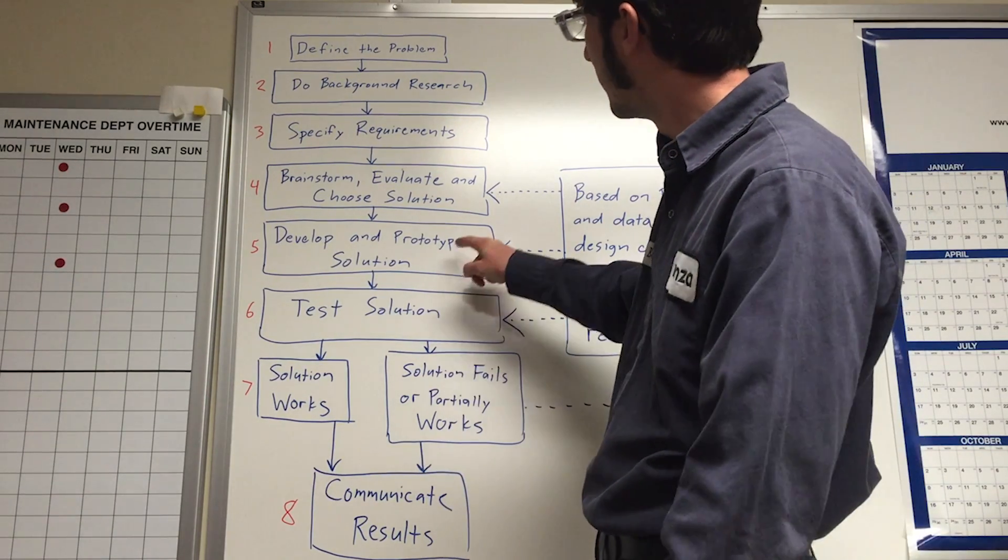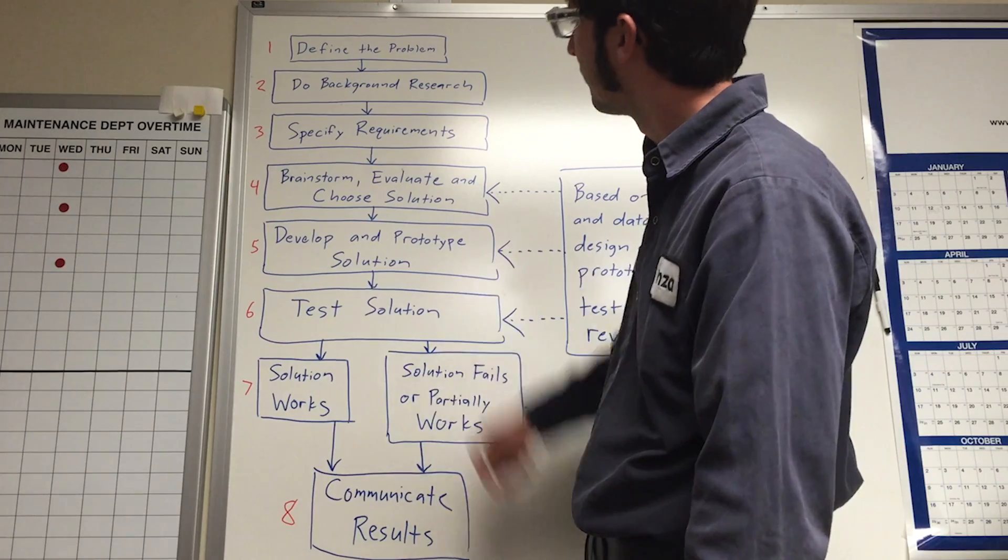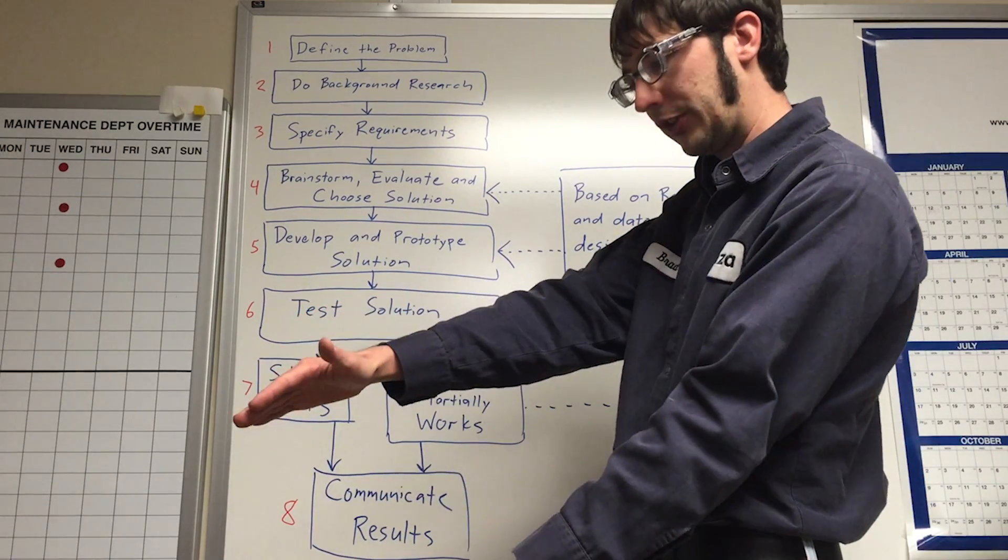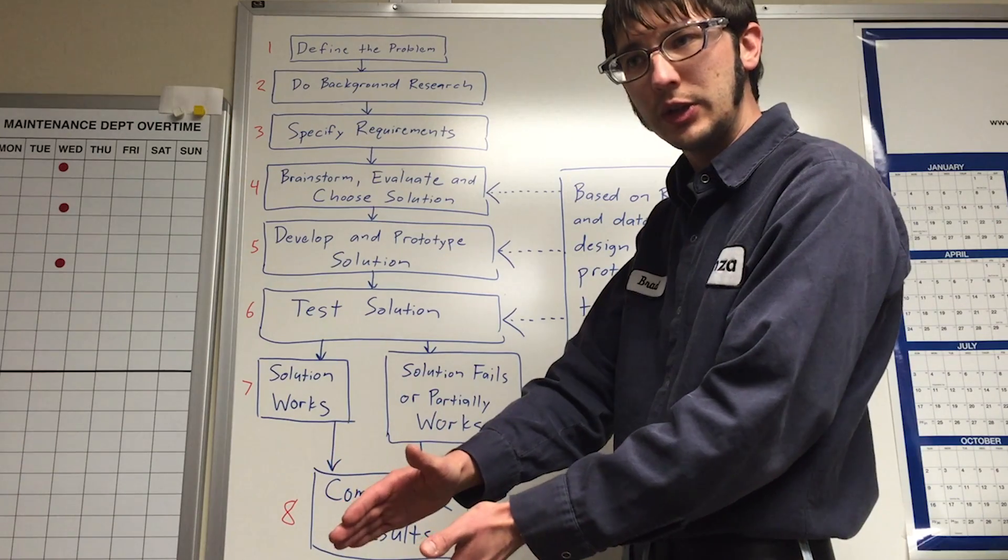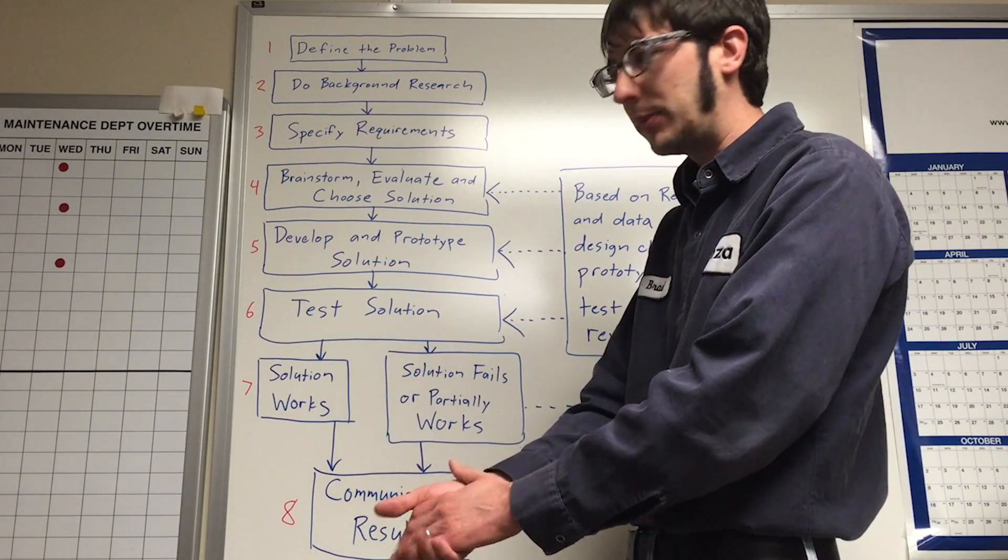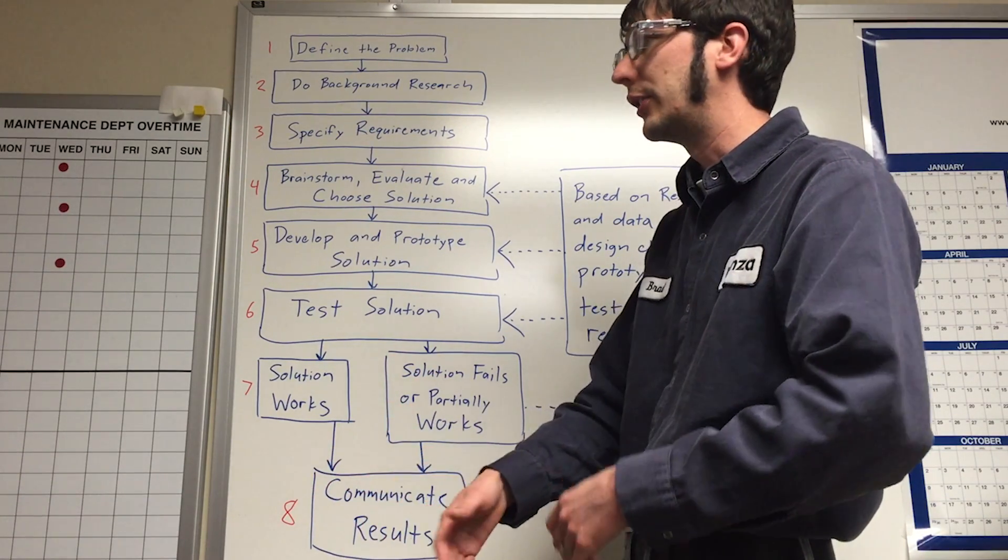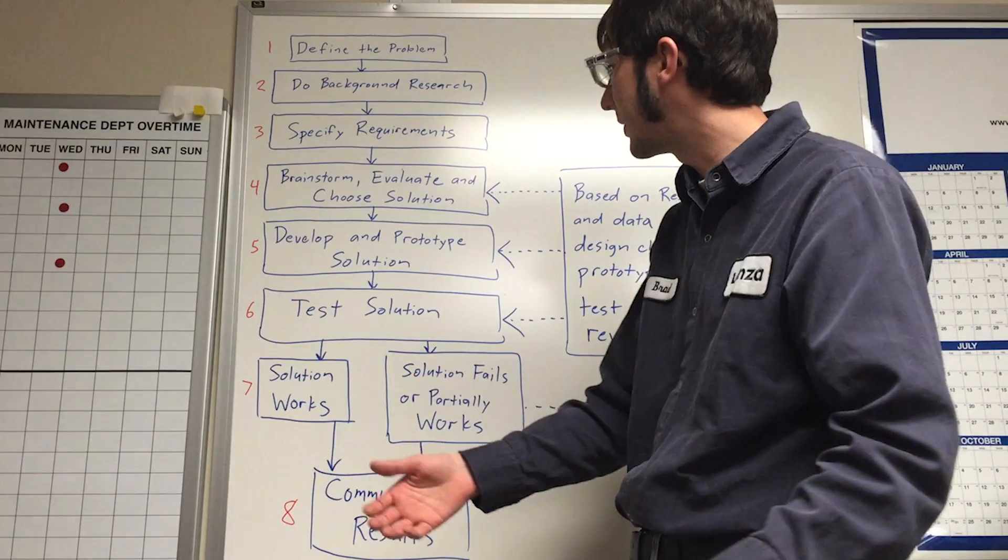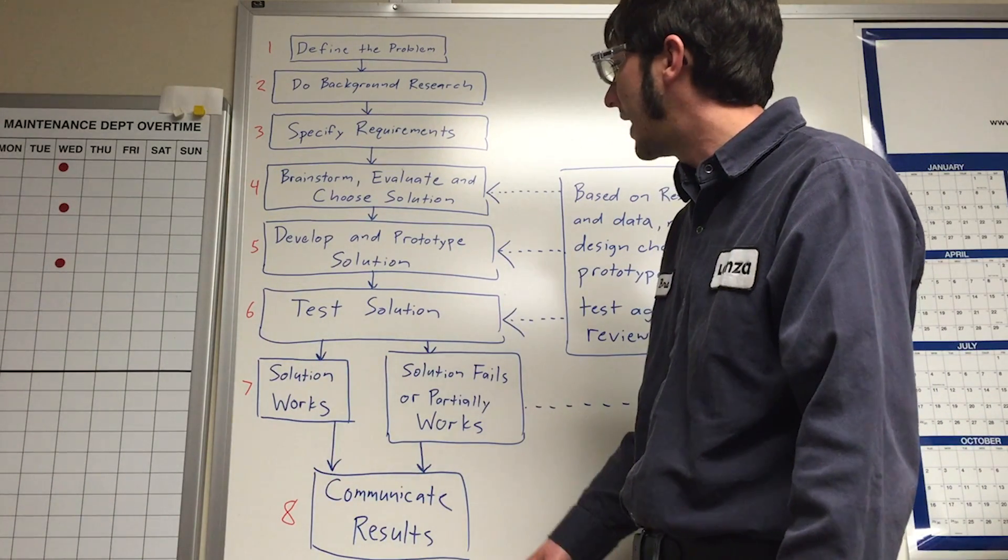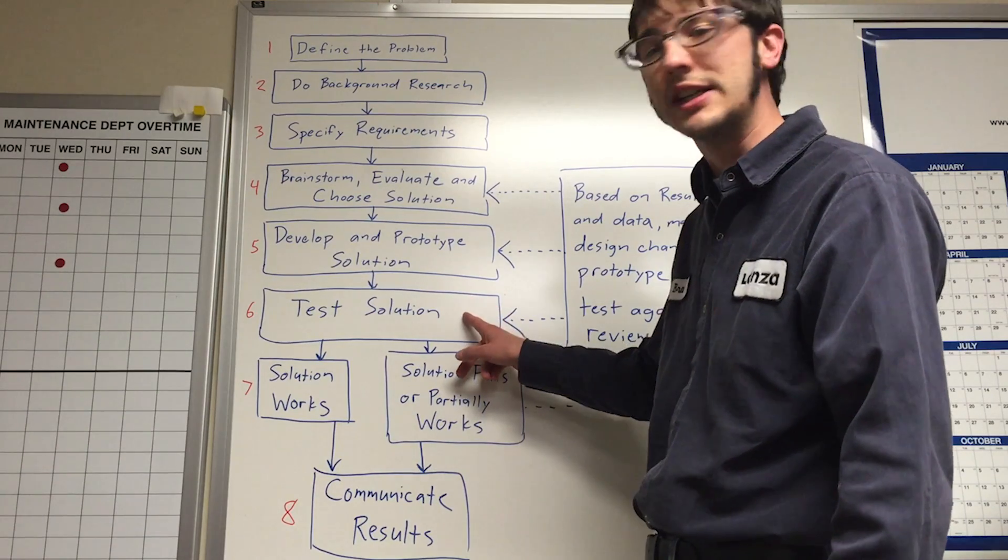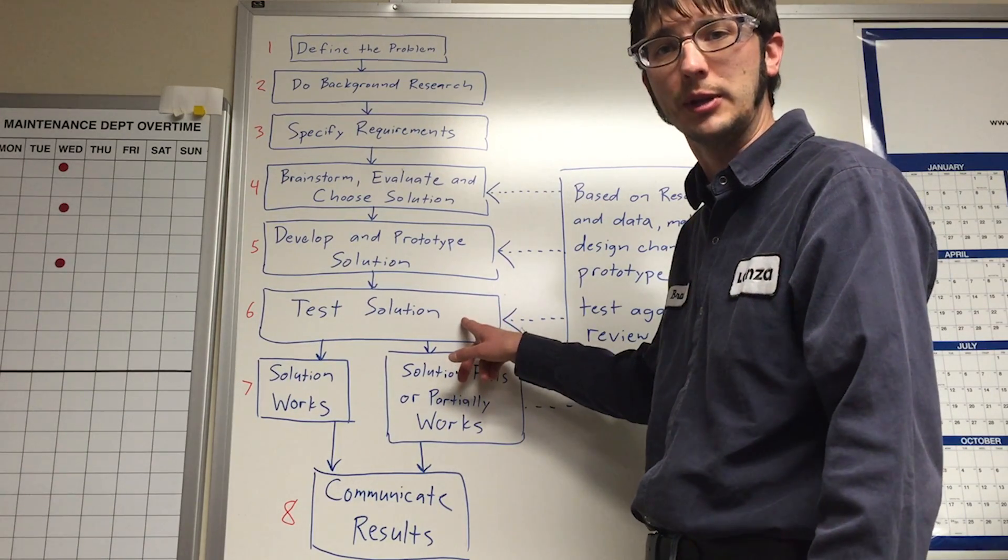Which then moves into develop and prototype the solution. So based on those lists of root causes, pick whatever will fix the issue, develop the prototype. Is it a new piece of equipment? Is it some process change, adjusting a temperature? Prototype it and figure out how that's going to be implemented. Next, step six is to test the actual solution in real time in the plant.